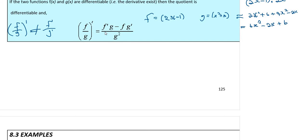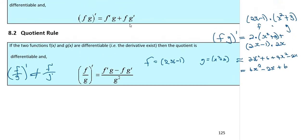Here is the quotient rule. Look at the numerator — you will almost see the product rule: derivative of f times g, and the other way around. But the product rule had a plus, and the quotient rule has a minus. Please don't confuse the two. Division gives us a minus there.